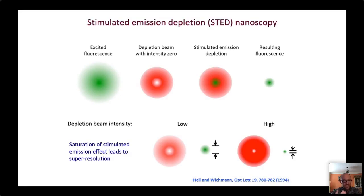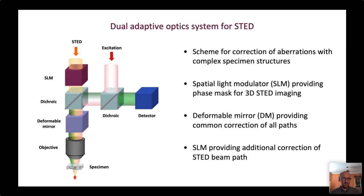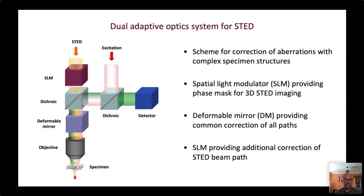Three-dimensionally resolved STED microscopy is more susceptible to aberrations. Our STED microscope has an excitation beam and an emission path constituting a confocal scanning microscope, plus a depletion path through a spatial light modulator which shapes the beam to have zero intensity at the center and also performs some aberration correction. A deformable mirror in the common path corrects aberrations in the excitation, detection, and depletion beam paths, and we use this alongside our image-based sensorless adaptive optics routines to correct for specimen-induced aberrations.